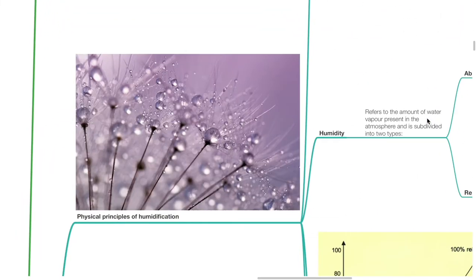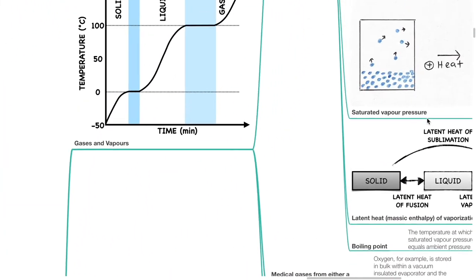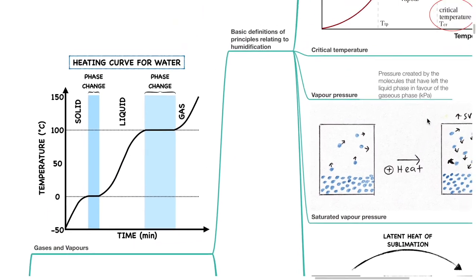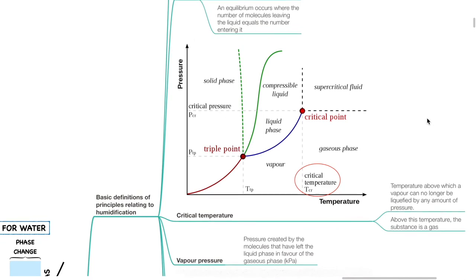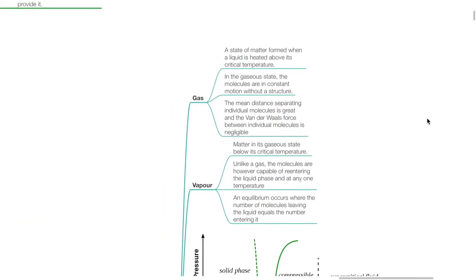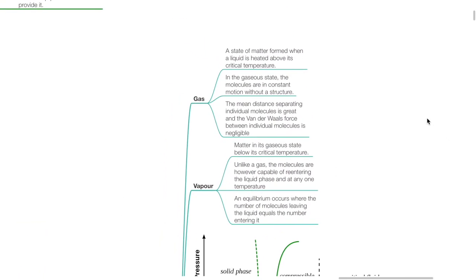Physical principles of humidification: gases and vapors. Basic definitions of principles related to humidification. A gas is a state of matter formed when a liquid is heated above its critical temperature. In the gaseous state, the molecules are in constant motion without a structure. The mean distance separating individual molecules is great and the van der Waals force between individual molecules is negligible.